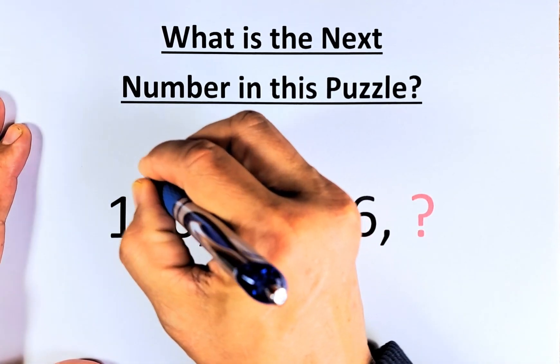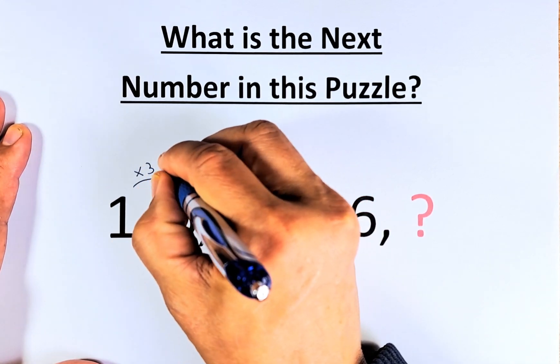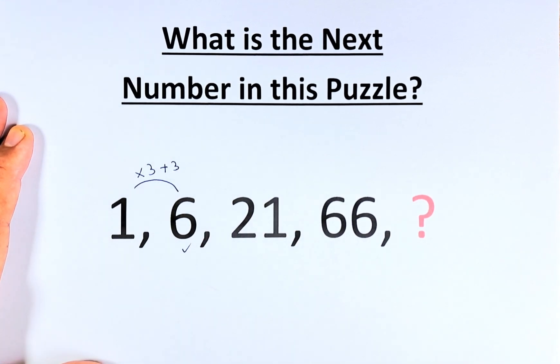So 1 to 6 is simple. You are just going to multiply 1 by 3. That will give us 3, and then we are going to add 3. So 1 times 3 is 3, 3 plus 3 will give us 6.